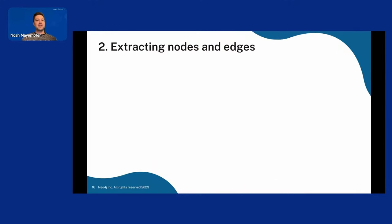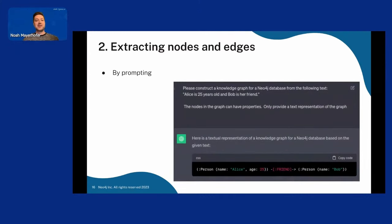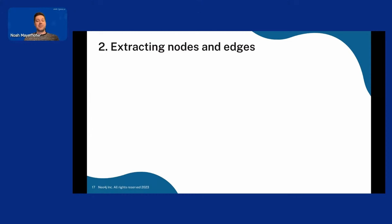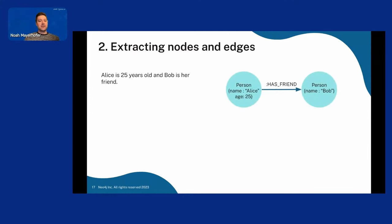Then we go to the really interesting part: extracting nodes and edges. We do this by just prompting an LLM. It's really cool that you can give an LLM an instruction and it will perform it. Here's an example: I gave it 'Alice is 25 years old and Bob is her friend' and said 'please create a knowledge graph on this.' At the bottom it created a graph representation — it works and it's really cool. We apply this process to all the text pieces we've chunked up, so 'Alice is 25 years old and Bob is her friend' becomes a graph as we've seen before.